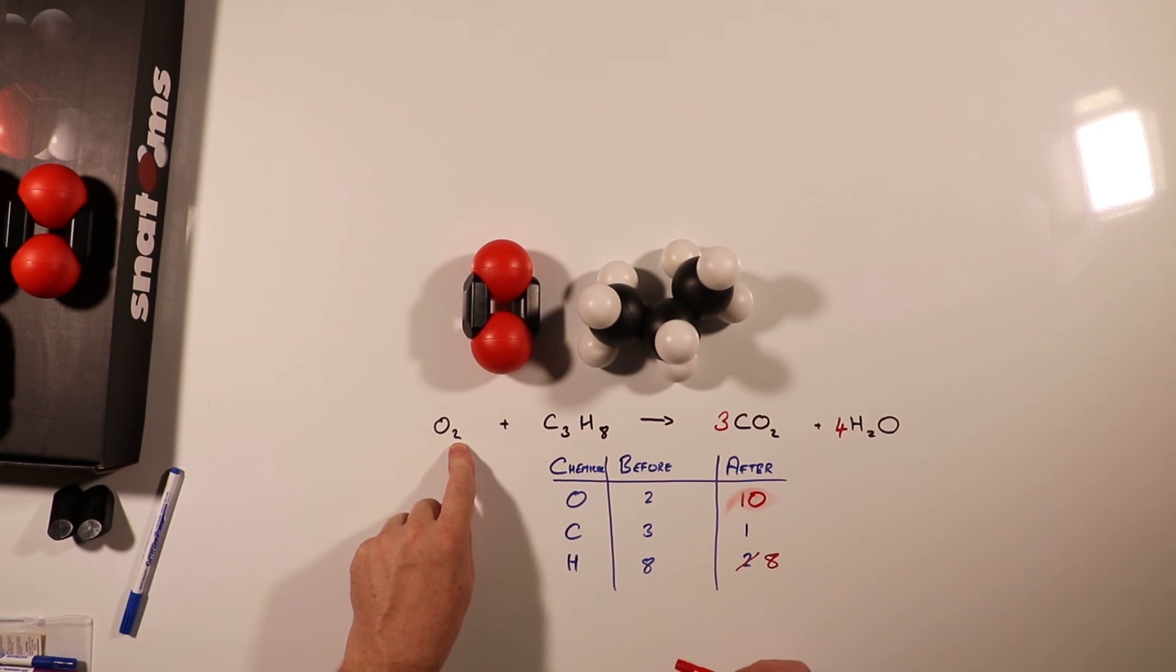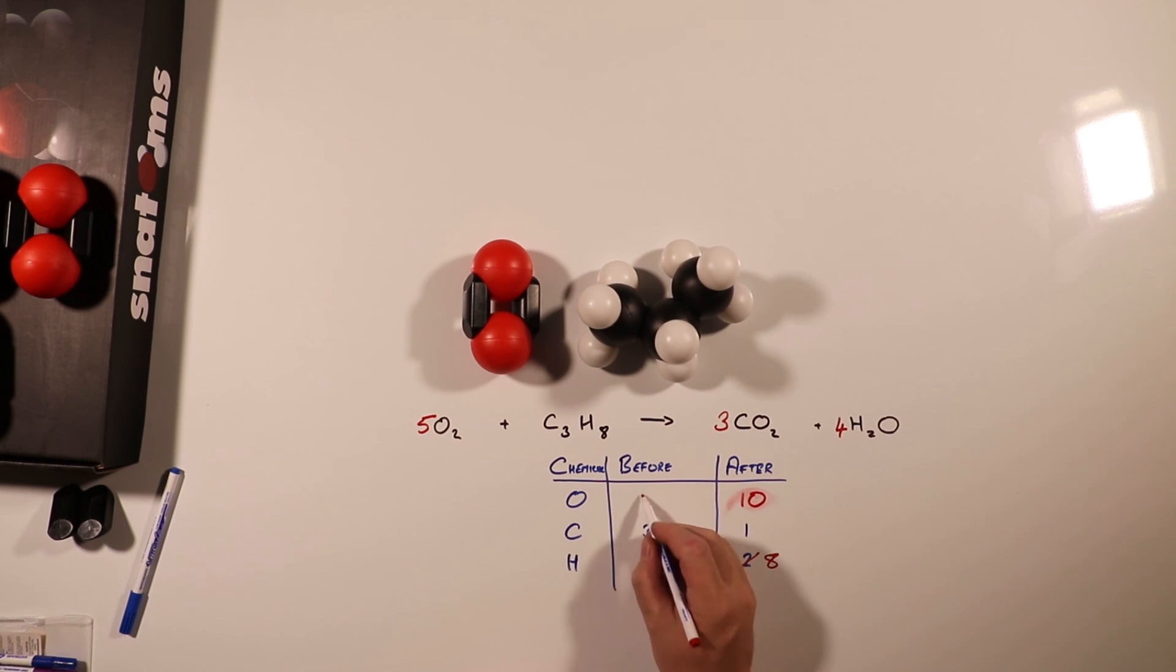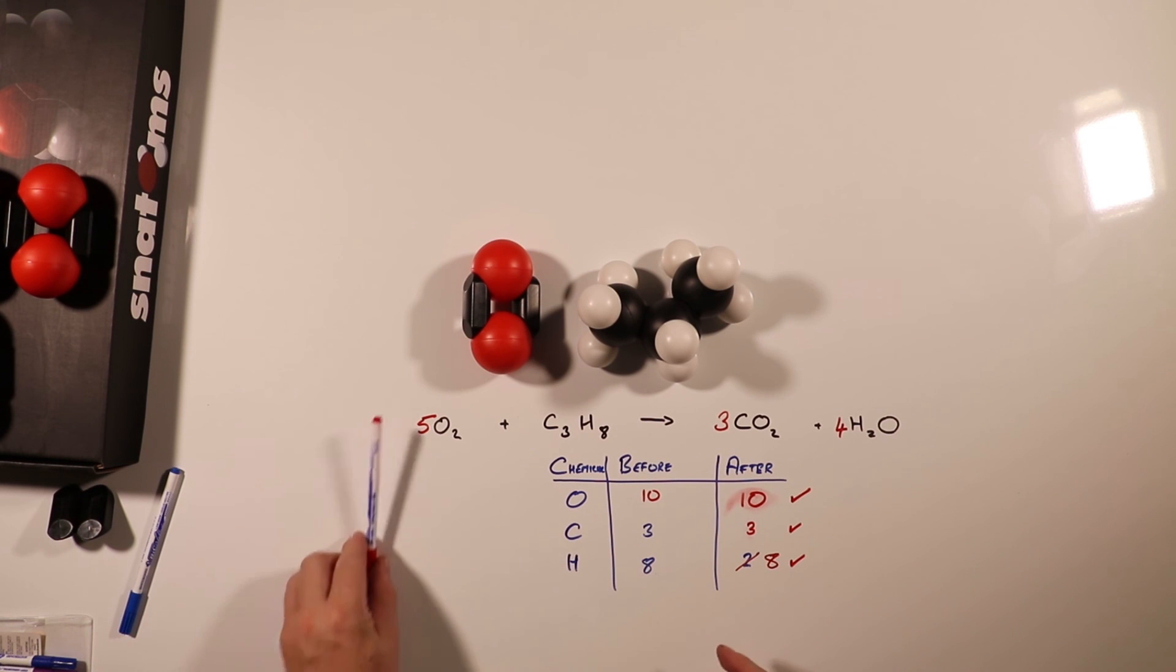If I've got ten oxygens on this side, then I must have ten there. Two times something make ten, so this makes this number five. So we have ten on this side, we've got three on this side, so that's balanced. That's balanced, and that's balanced. So there the equation is all balanced.